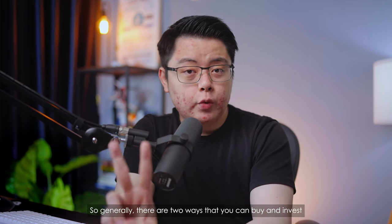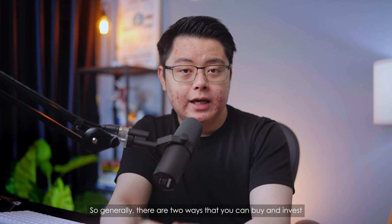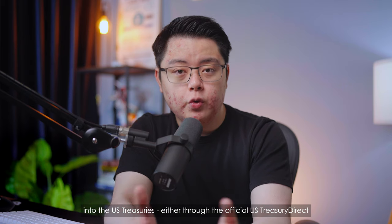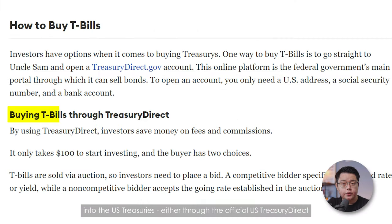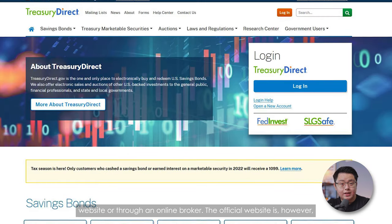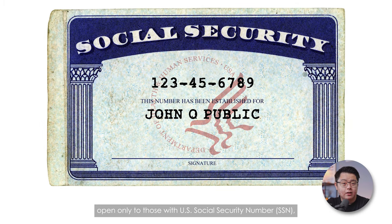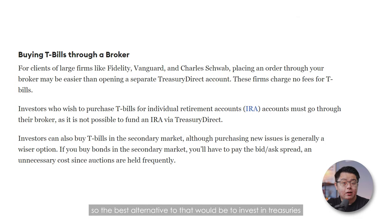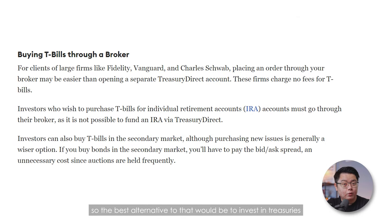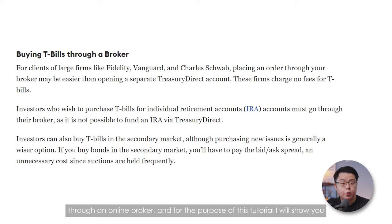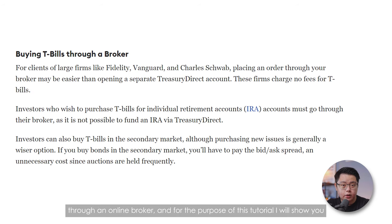So generally, there are 2 ways that you can buy and invest into US treasuries: either through the official US Treasury Direct website or through an online broker. The official website is however open only to those with a US Social Security Number (SSN), so the best alternative would be to invest in treasuries through an online broker.